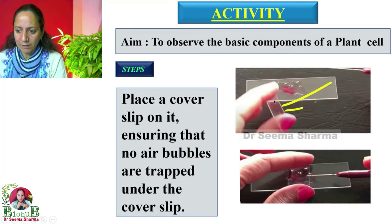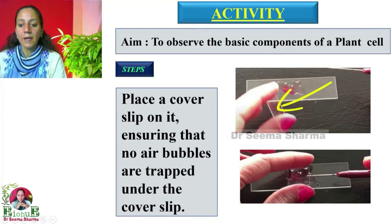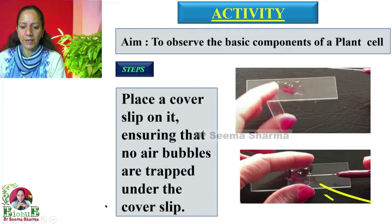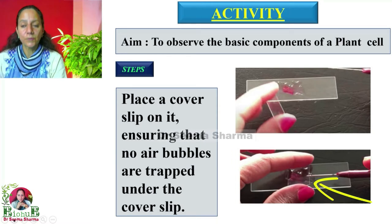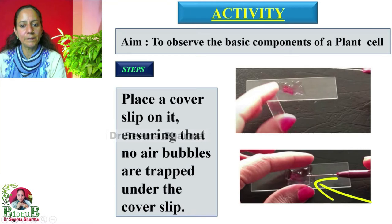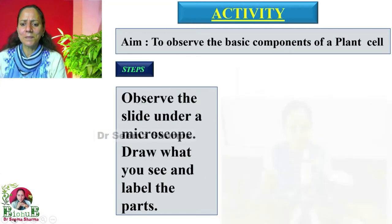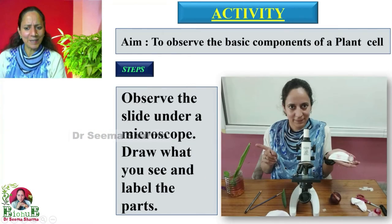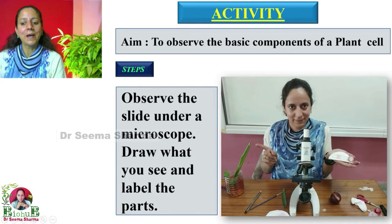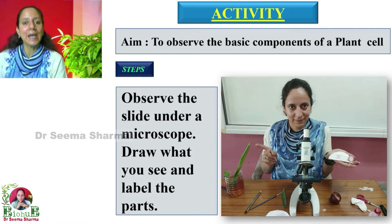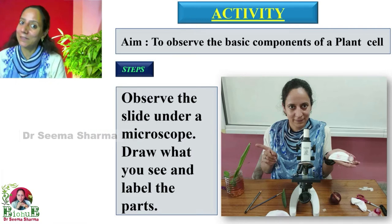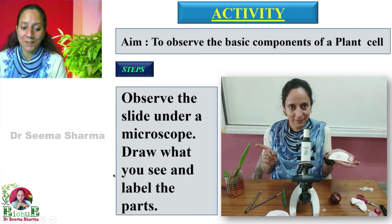This is the cover slip. We have to place it very gently with the help of forceps on the onion peel, so that no air bubble gets trapped under the cover slip. The next step is to observe the slide under the microscope, draw what you see, and label its parts.